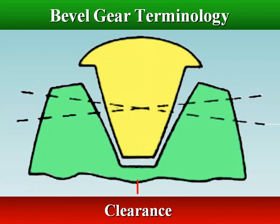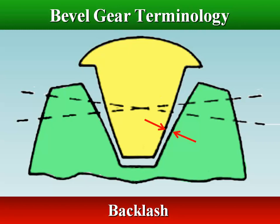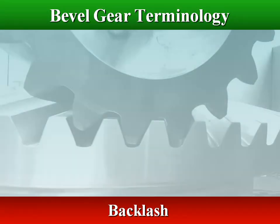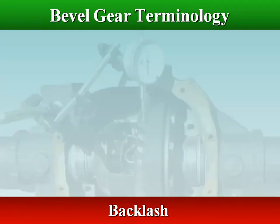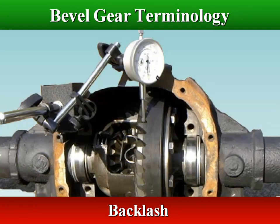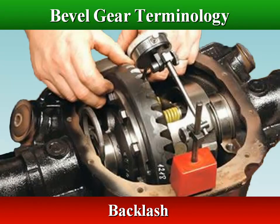Clearance is the distance between the top of the tooth and its mating gear. Backlash is the space between the teeth in mesh. Backlash is needed to absorb manufacturing error and secure thickness of oil film on gear surface.